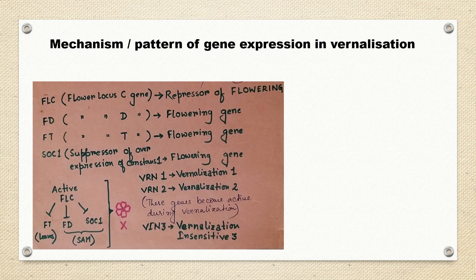FT is found in the leaves. FD is found in the shoot apical meristem, and SOC1 is also found in the shoot apical meristem. When FLC is active, it will inhibit FT, FD, and SOC1.